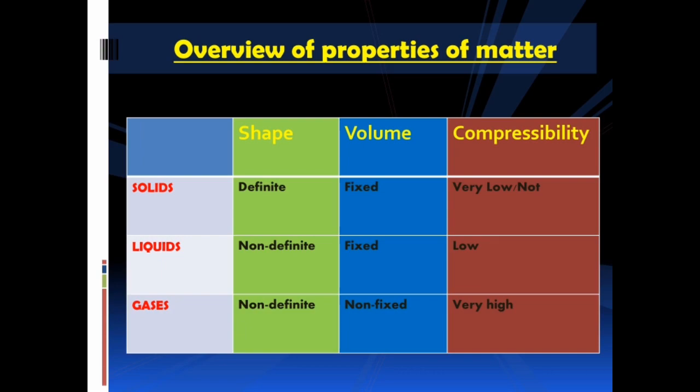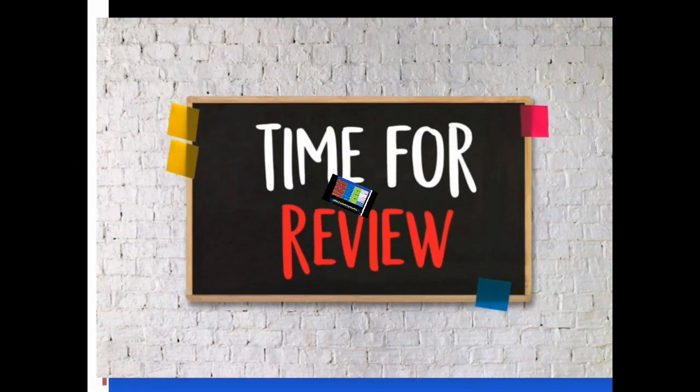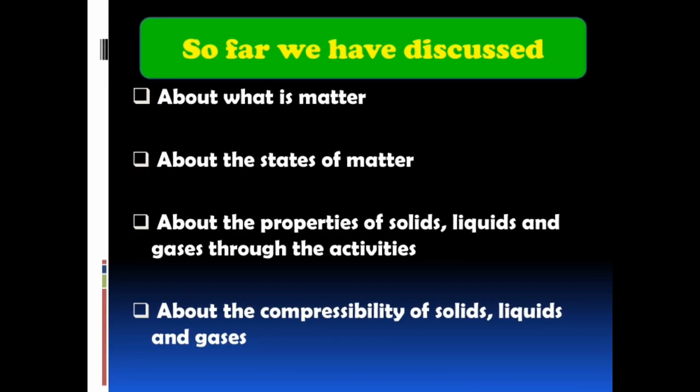Overview of properties of matter: solids have definite shape, fixed volume and very low compressibility. Liquids have non-definite shape, fixed volume and low compressibility. Gases have non-definite shape, non-fixed volume and very high compressibility. It's time for review. So far we have discussed what is matter, the states of matter, the properties of solids, liquids and gases through the activities, and the compressibility of solids, liquids and gases.